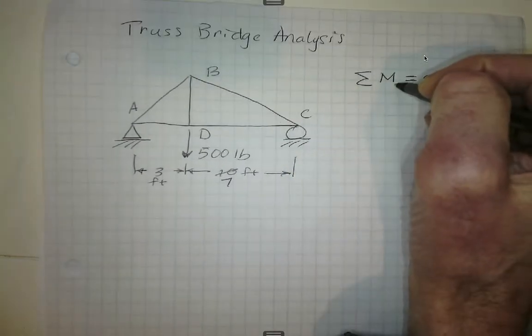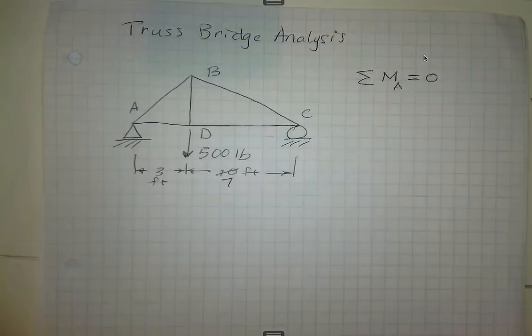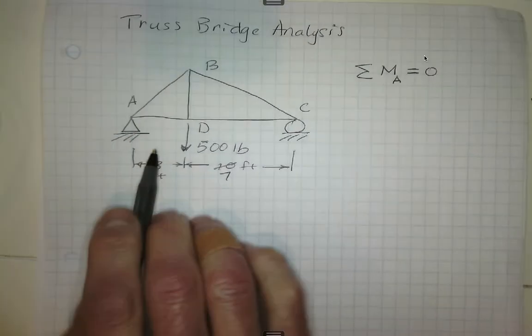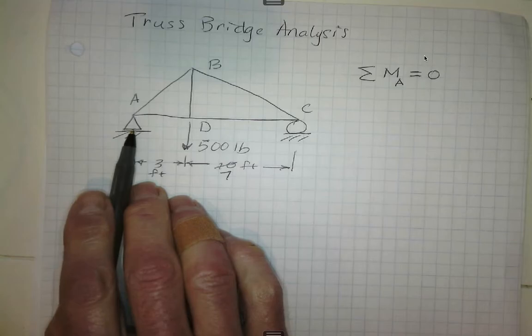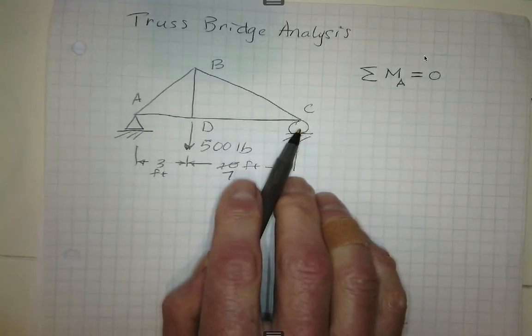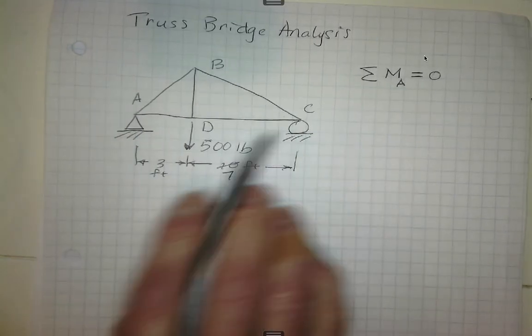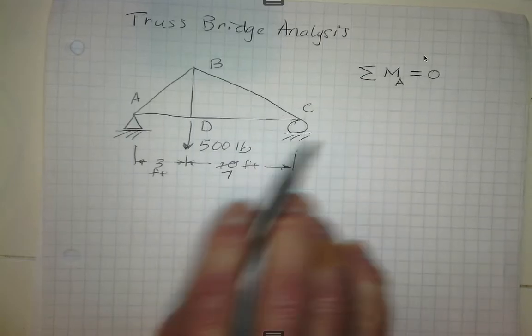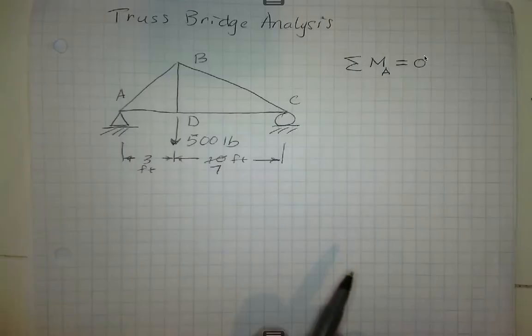I'm going to do just as I did before, analyze the moments around point A. Just as mentioned before, this is a fixed point at point A that cannot move. There's a roller at point C that would allow x motion, but would not allow y motion.